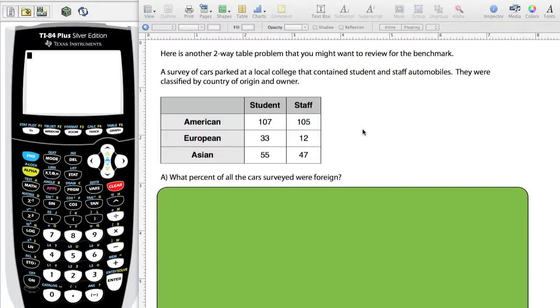Two-way tables and categorical data. Here's a problem where we have two variables. One is type of driver - students or staff members. And you have the type or the make of the car: American, European, and Asian.